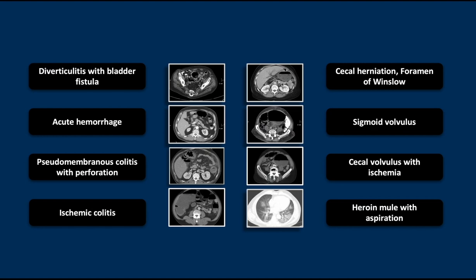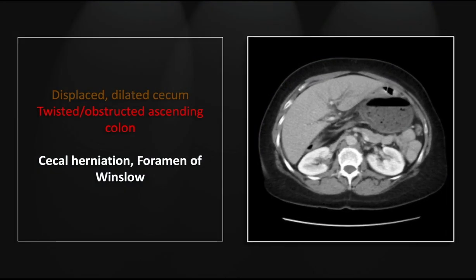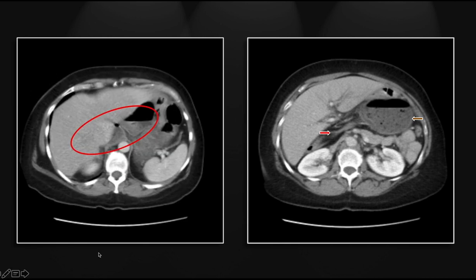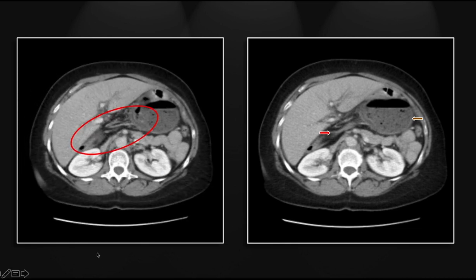Our next case is an unusual cecal herniation through the foramen of Winslow. Here is the tip of the cecum, which has migrated superiorly and from right to left, passing through the foramen of Winslow. You can see it is elongated and distorted throughout this segment, right through the portal region.